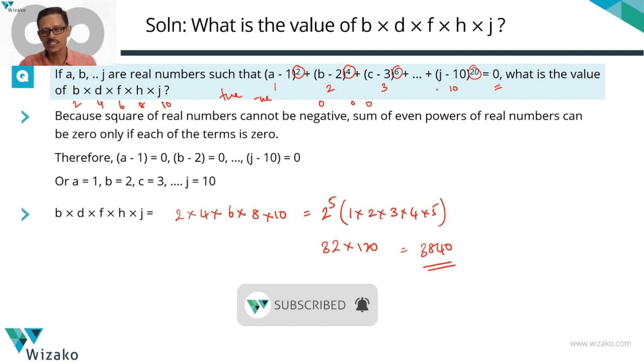So though this expression looks a little cumbersome, the concept that got tested is basically: if you have real numbers raised to even powers, you'll get an answer which is going to be non-negative. If you're adding a bunch of non-negative numbers and that ends up being 0, then it is evident that not even one of these numbers can be anything other than 0.